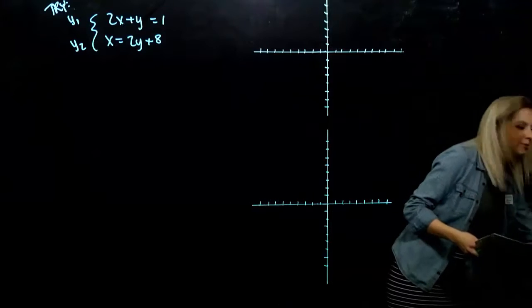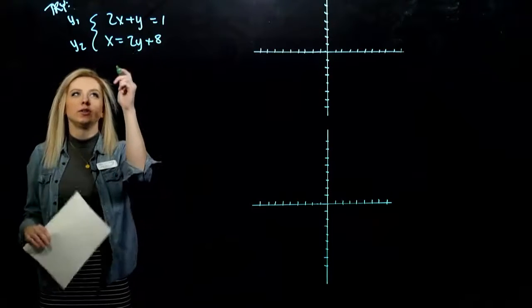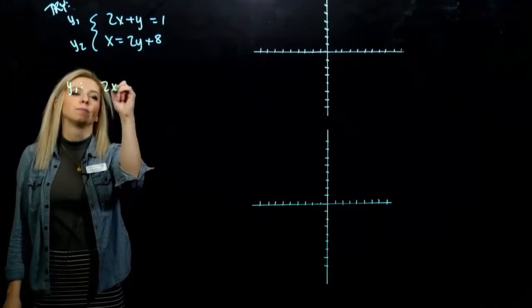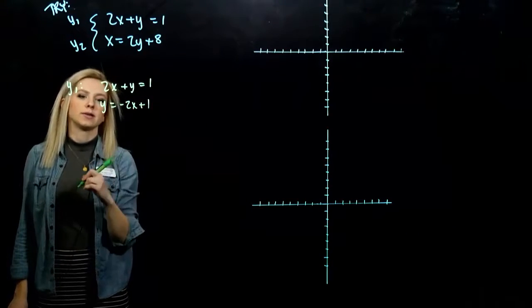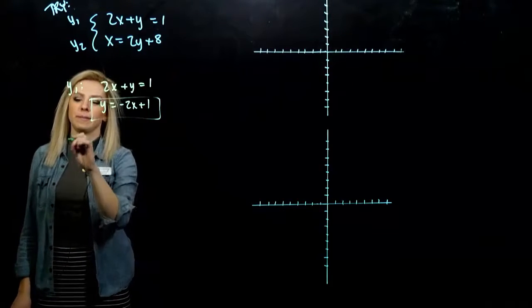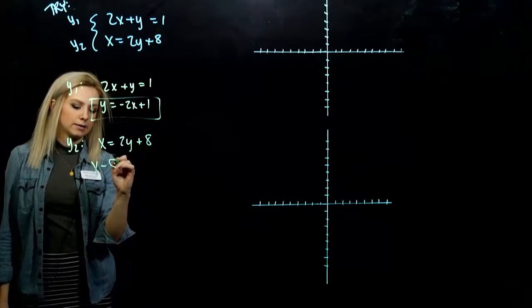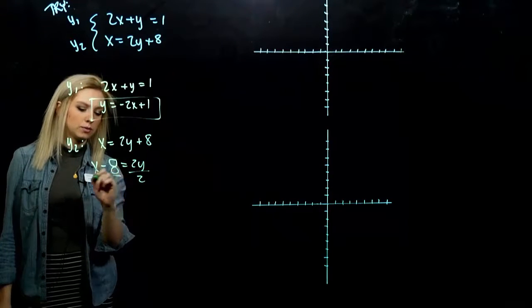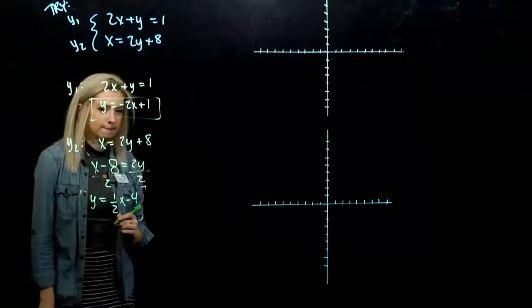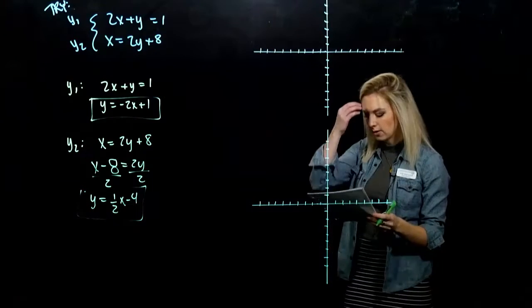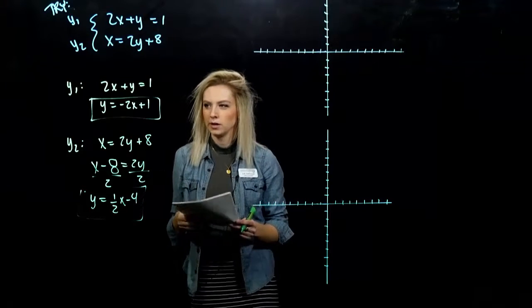So we have to get y on its own. To be able to graph y1. So what did you have to do? I want y on its own. We need to subtract 2x from both sides. We could go ahead and graph that now. And y2 we want to do the same. So we need to subtract 8 from both sides, divide by 2. So y is one-half x minus 4. Once we have them in that form, we can go ahead and graph pretty easily. You could have also solved for the intercepts.